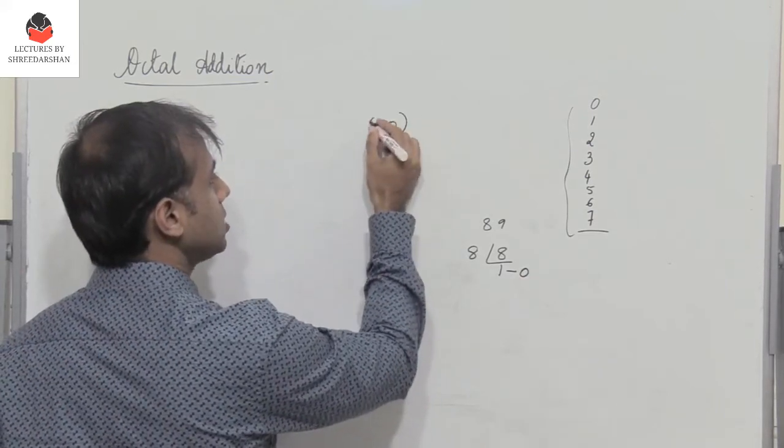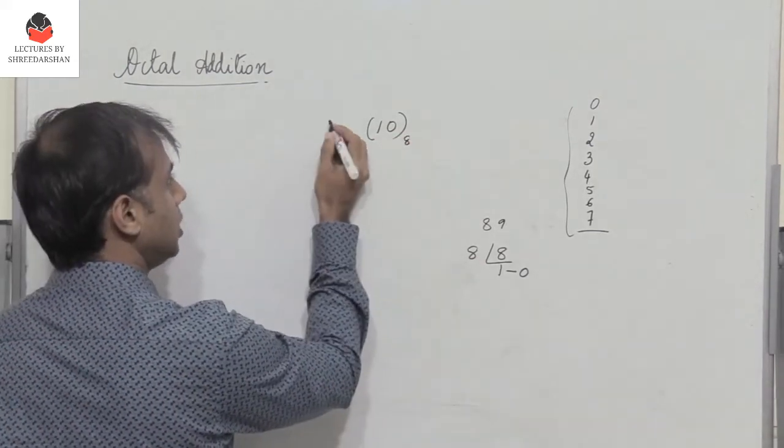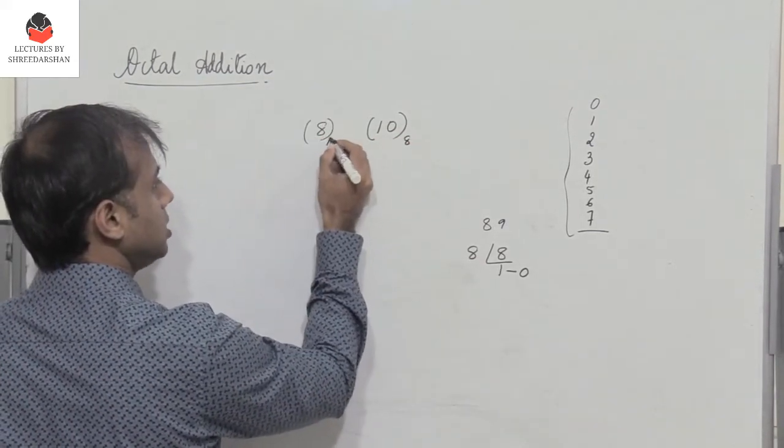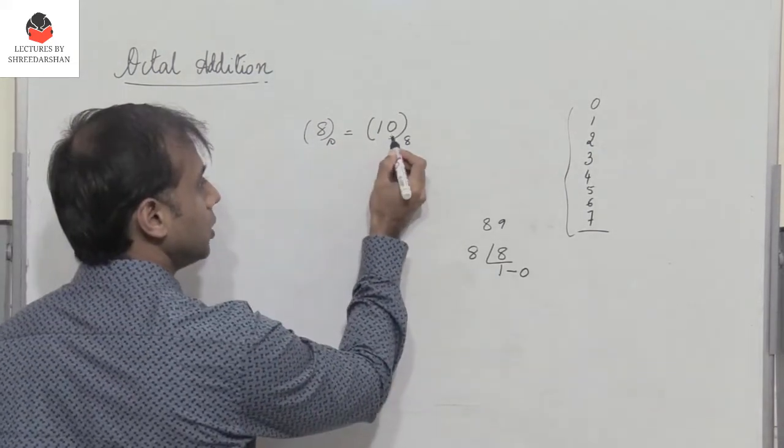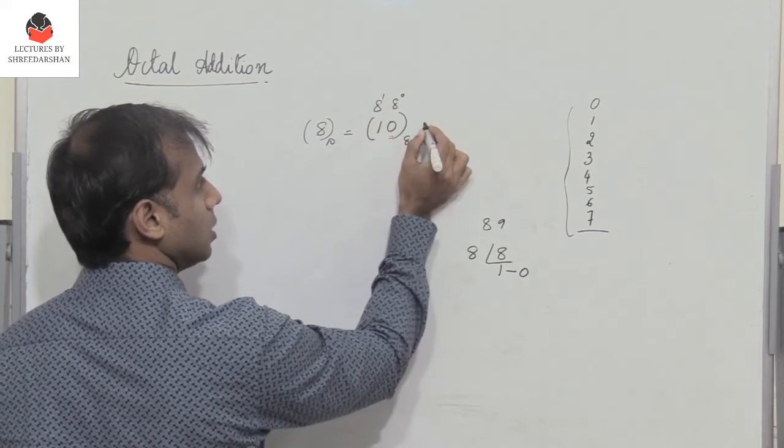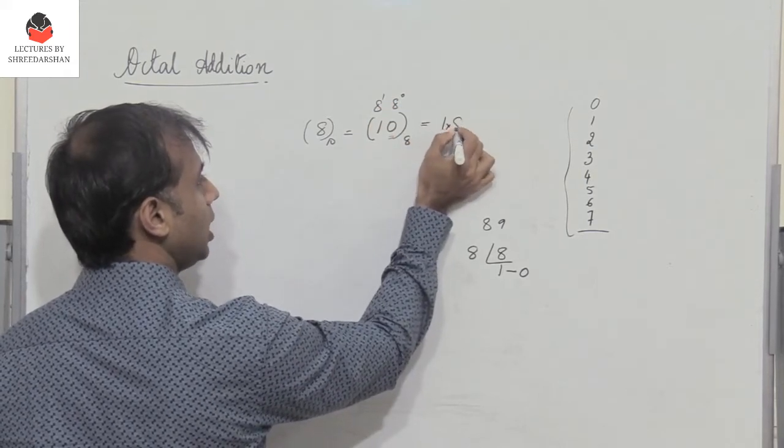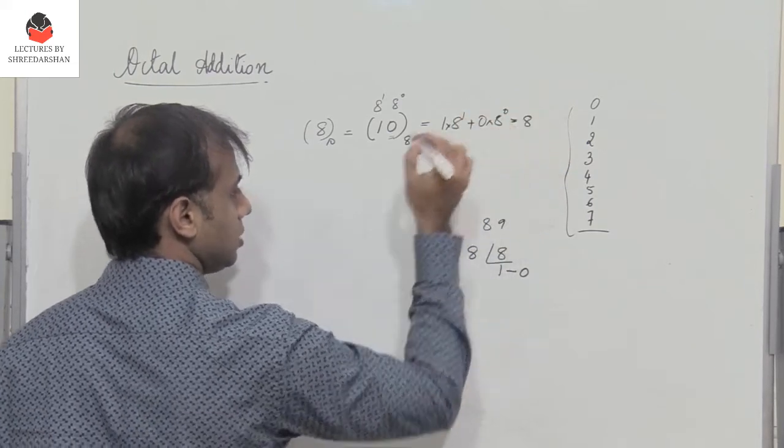So 1, 0 is the octal representation of the decimal number 8. The power of the units place is 8 power 0 and this is 8 power 1. So we have 1 into 8 power 1 plus 0 into 8 power 0, which gives me 8.